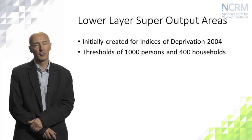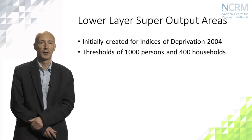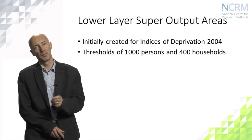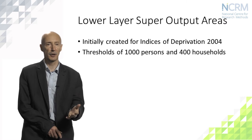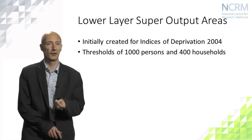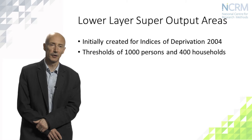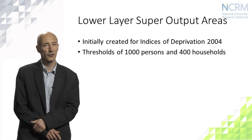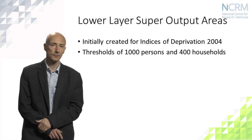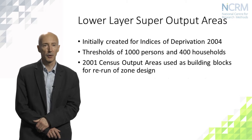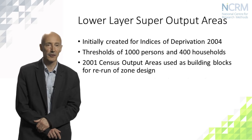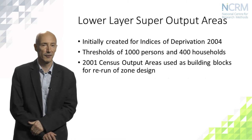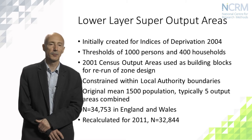The lower layer super output areas, originally created for the government's indices of deprivation in 2004, are the result of taking the output areas and putting them back into the beginning of the zone design process and running the whole process again. The output areas become the building blocks in this second zone design problem. The thresholds here are larger — 1,000 persons or 400 households — because the data to be made available are potentially much more detailed and sensitive, so the confidentiality threshold is higher. The 2001 output areas were building blocks for the 2001 super output areas published in 2004, and the 2011 output areas are building blocks for the new 2011 super output areas, each constrained within local authority boundaries.